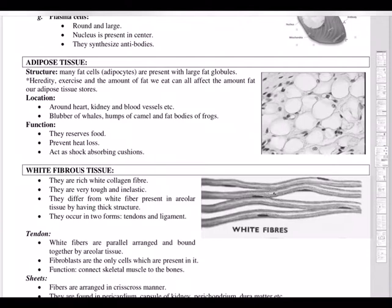Adipose tissue is mainly made up of fat cells called adipocytes, which contain large fat globules. Heredity, exercise, and the amount of fat we eat can all affect how much fat our adipose tissue stores. It is located around the heart, kidneys, and blood vessels — in camels it is in the hump, in whales it is called blubber, and in frogs it is in the fat bodies.